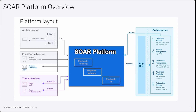Before we start with playbooks, let's quickly look at the SOAR platform layout. As you can see, this is a screen grab of the SOAR platform consisting of authentication, email infrastructure, threat services, orchestration, and the SOAR platform in the center. The authentication block shows identity provider mechanisms — LDAP and IAM are provided. The email infrastructure block shows mechanisms to create incidents by email; in addition to IMAP, Exchange and OAuth are also supported. The SMTP outbound notification is the mechanism to email users when specific events occur. The threat services block shows the mechanism to check data such as file names, MAC addresses, and suspicious URLs with various cyber threat sources.